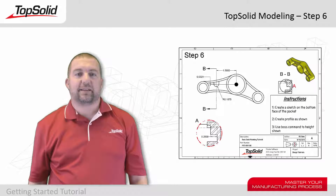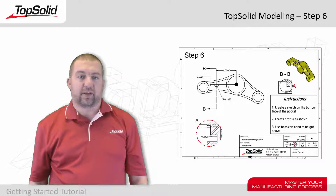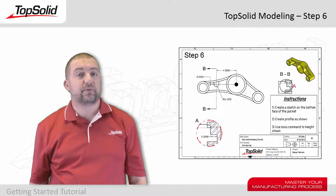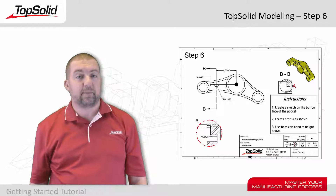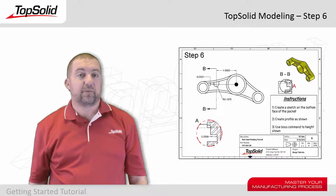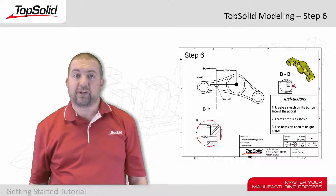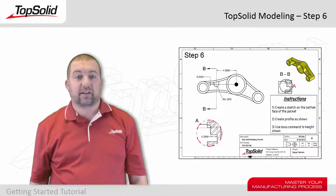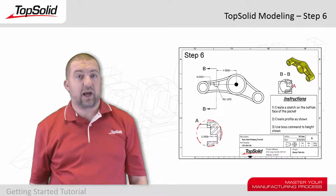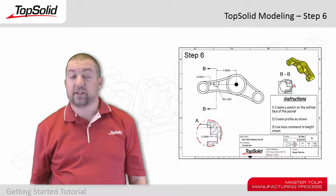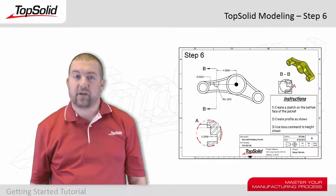Hi again. Welcome back to the TopSolid Modeling tutorial. In step six, we're going to create another boss. When we create our sketch, we're going to introduce you to some new tools. We're going to start by using the project command, which is useful for copying edges that already exist on the model. We're also going to learn another trick with circles — doing circles by two points. Finally, we'll learn how to dimensionally constrain our sketch, and then use the boss command from step five. Let's see how it all comes together.